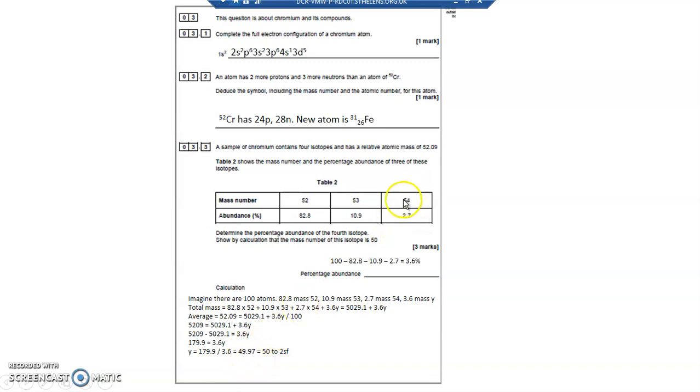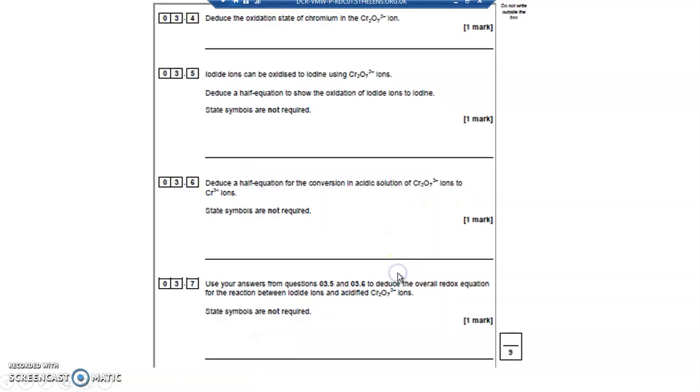So that's the mass number. Now, all the other mass numbers are two significant figures, so I'm going to round it up to 50. So my missing mass number is 50.